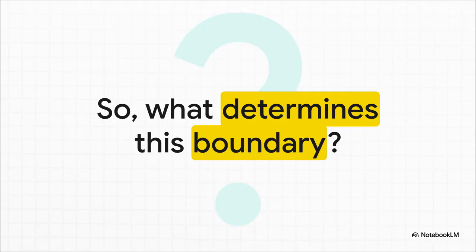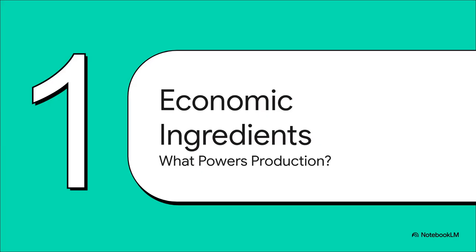What actually creates this boundary in the first place? For Danny, it's pretty clear — it's his time, his skill, his energy. But for a whole economy, what are those fundamental ingredients that set the absolute limit on what a country can produce? They have a name, of course. Economists call them the factors of production. These are the absolute bedrock of any economy, whether we're talking about Danny's little island or a global superpower.